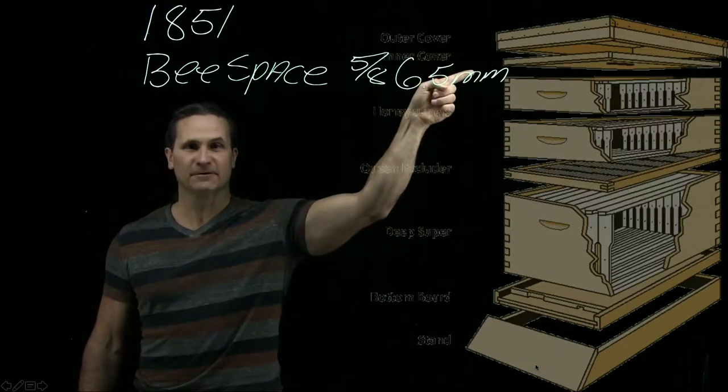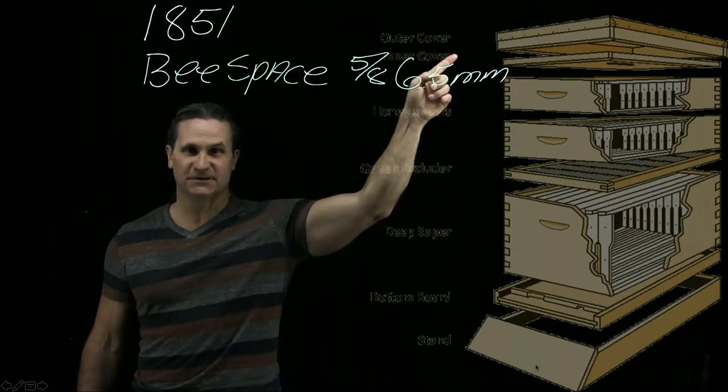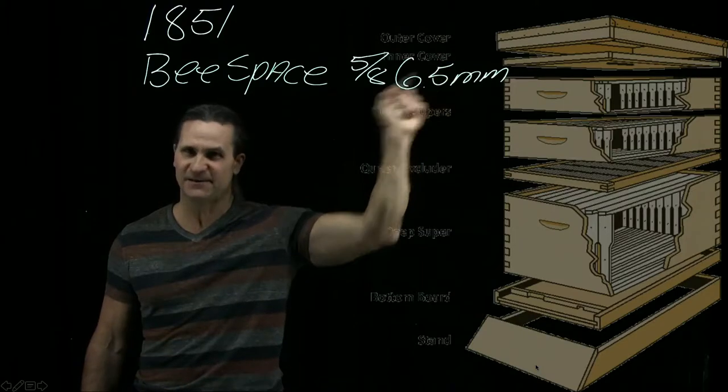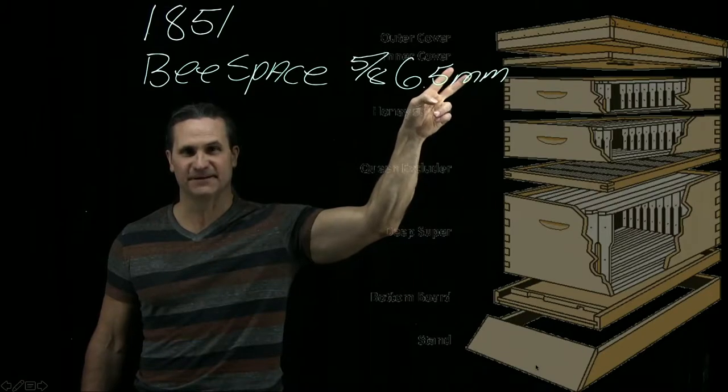Then we have an inner cover and a telescoping lid. All right, the inner cover has to be used in conjunction with a telescoping lid or they will seal this telescoping lid down so tight that you cannot get it back up. Okay, so if you use the inner cover and a telescoping lid, you have to use them together.